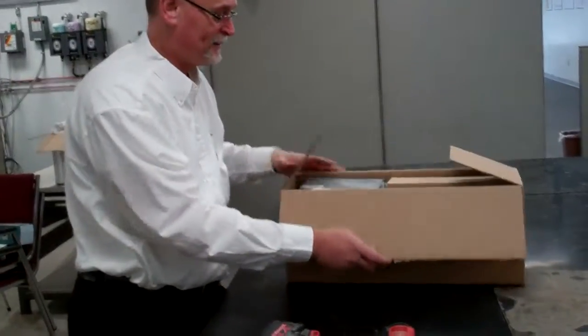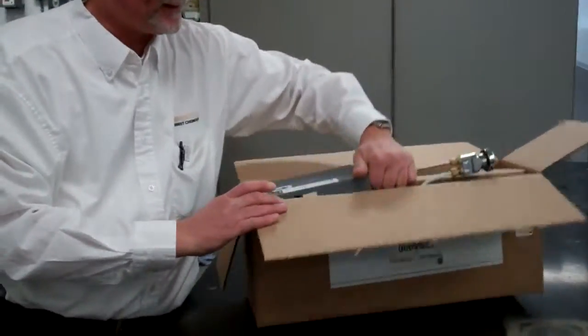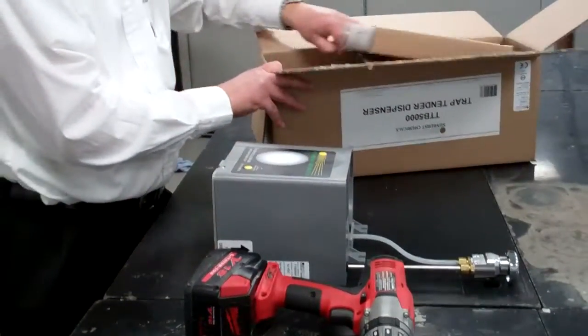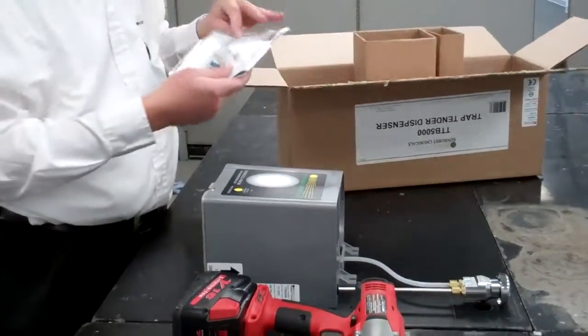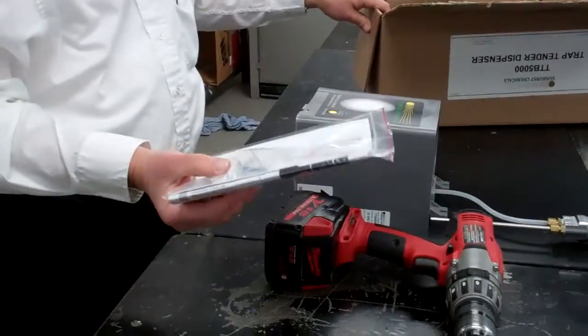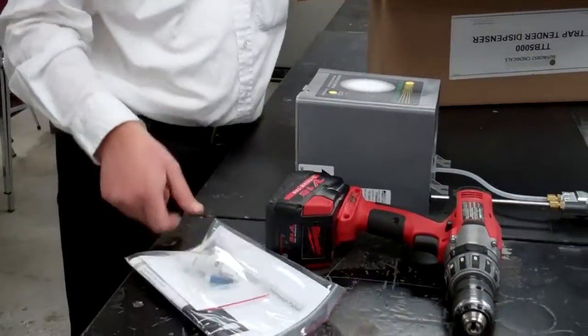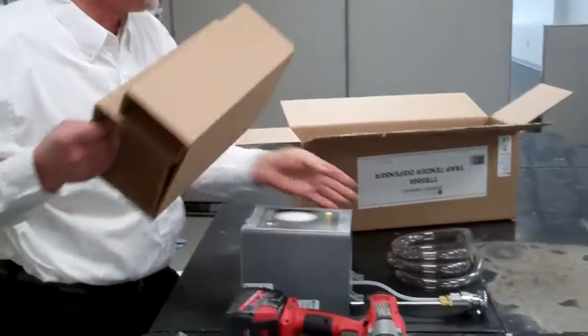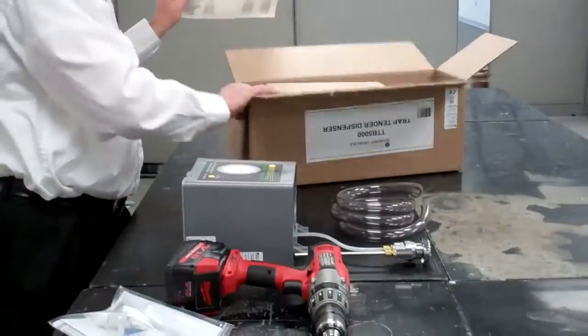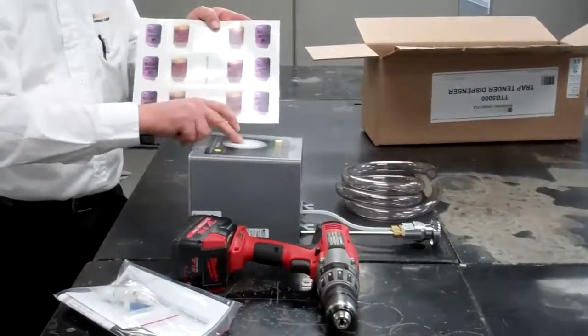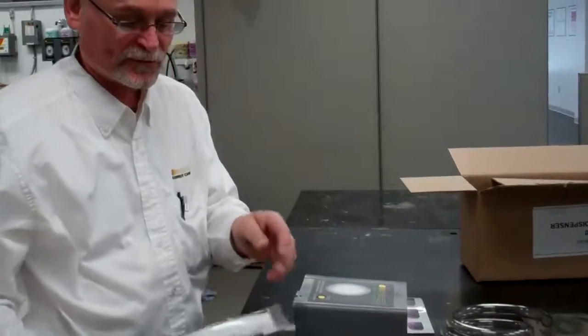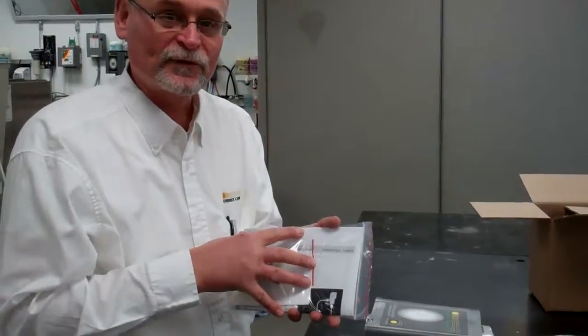In the box here, we'll have the trap tender itself. It will come with a filter, screws and anchors, a discharge tube, and some stickers for the touch pad. Also, we'll have our programming instructions inside the bag.